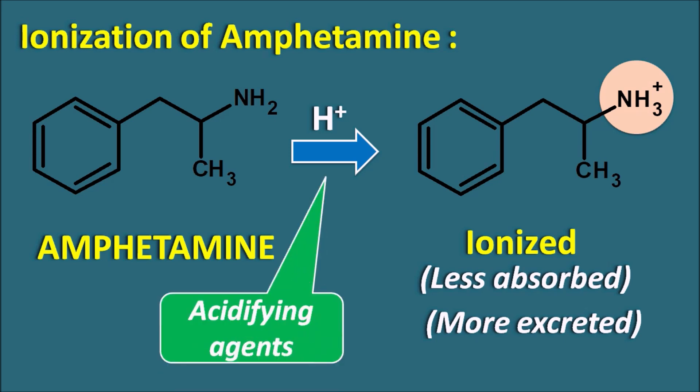Acidifying drugs — such as guanethidine, a noradrenergic neuron blocker — can produce an acidic pH within the GI environment. Similarly, urinary acidifiers can increase excretion of amphetamine. In this way, the bioavailability of amphetamine can be influenced by acidifying drugs.